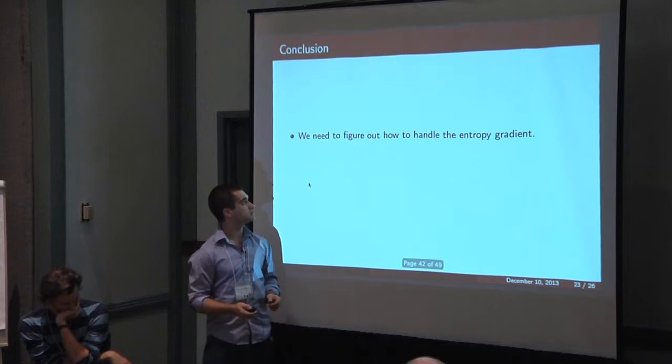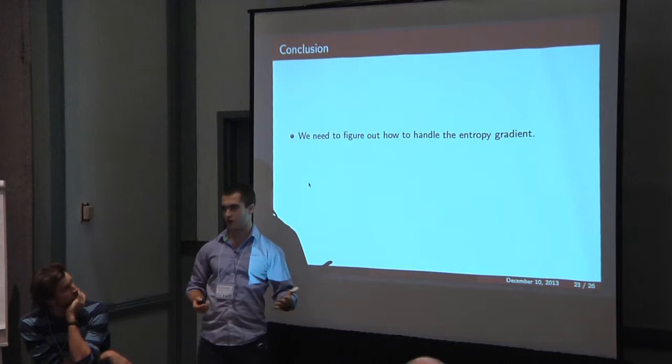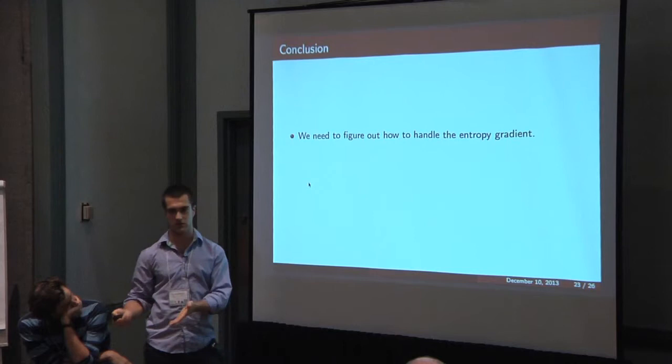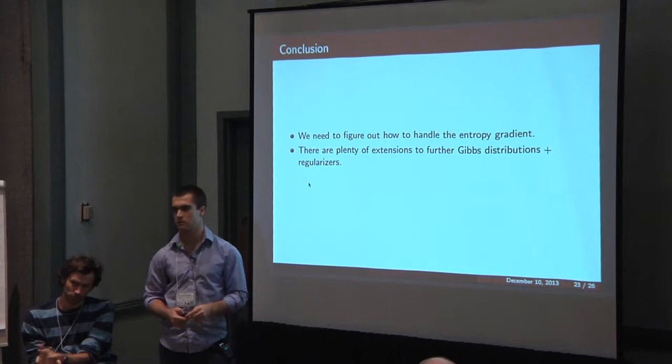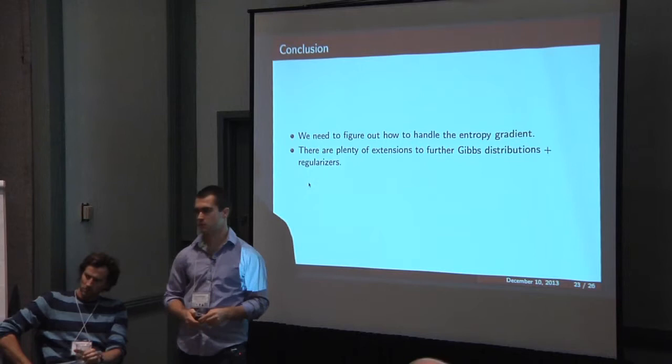In conclusion, we need to figure out how to handle this entropy gradient because it's a little annoying. But I think that Gibbs distributions are really common in practice and it's an interesting approach to reduce it to MAP inference. There are plenty of extensions that I think we should also consider. Thanks a lot.